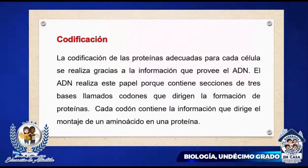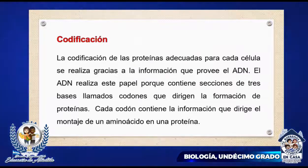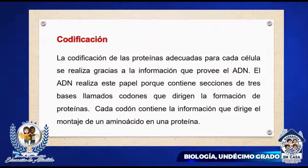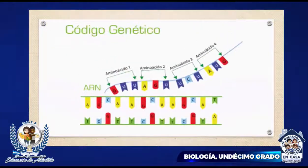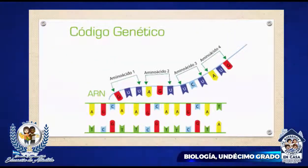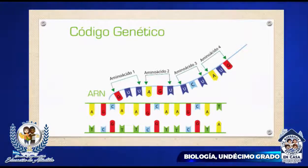Codificación. La codificación de las proteínas adecuadas para cada célula se realiza gracias a la información que provee el ADN. El ADN realiza este papel porque contiene secciones de tres bases llamados codones que dirigen la formación de proteínas. Cada codón contiene la información que dirige el montaje de un aminoácido en una proteína. Aquí tenemos, por ejemplo, un código genético donde podemos observar cómo un aminoácido está compuesto por tres bases nitrogenadas. A esto se le denomina codones.